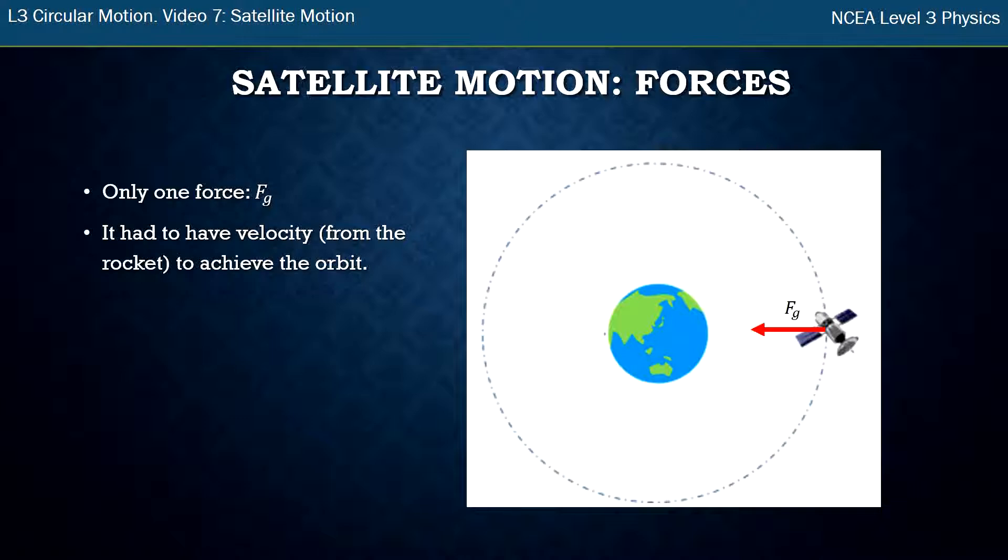The rockets that send them up there have to go up to the right height above the Earth, but most importantly, they have to go tangentially very, very fast to get enough speed so that this thing will keep falling towards the Earth. Once it's got that speed, the rocket just drops off. Don't need the rocket anymore.